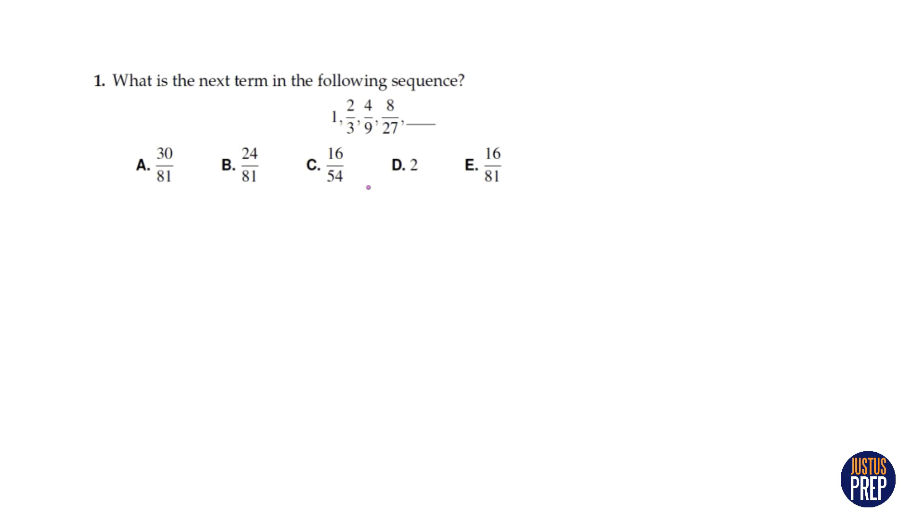So we can use the formula for a geometric sequence which is a sub n is the first term times the common ratio raised to the n minus one. So the first term times the common ratio, meaning the number that it's being multiplied by each time, raised to the n minus one. And here this is going to be the fifth term that we want. So this is a sub five.